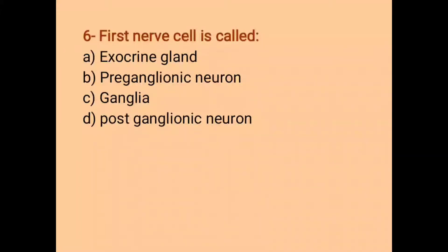Number 6. First nerve cell is called Exocrine Gland, Pre-Ganglionic Neuron, Ganglia and Post-Ganglionic Neuron. The correct option is Pre-Ganglionic Neuron. The second nerve cell is from Post-Ganglionic Neuron.